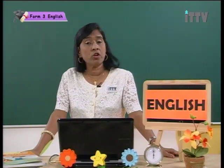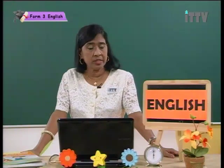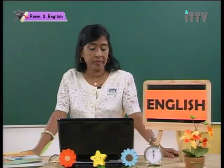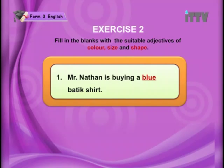Now we are going to go on to an exercise where you are required to fill in suitable adjectives of color, size and shape. Number one: Mr. Northern is buying a blank batik shirt. Answer: Mr. Northern is buying a blue batik shirt. So you can visualize what kind of batik shirt it is — a blue batik shirt.